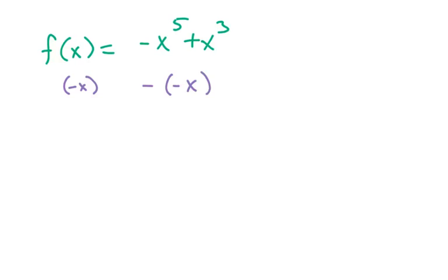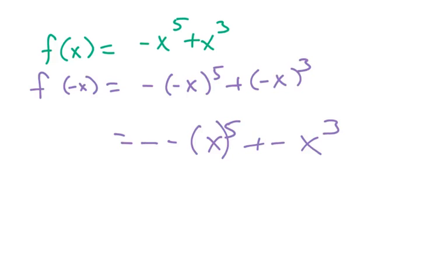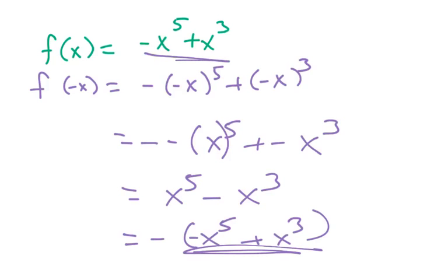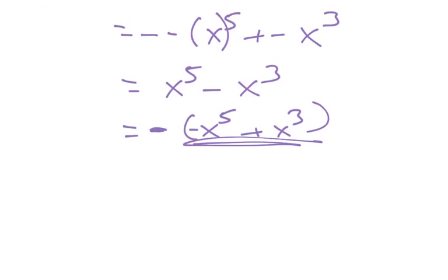And this breaks it down such that now you have negative negative x to the fifth plus negative x cubed, or simply the signs change. x^5 - x^3. And so if I factor a negative out, I get -(x^5 + x^3), which is this original green function with a negative sign in front.